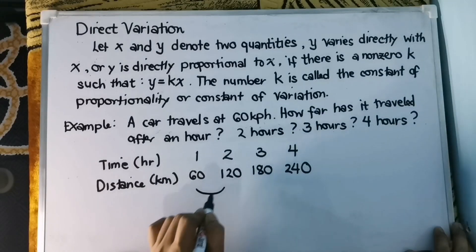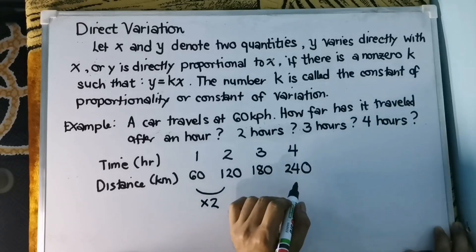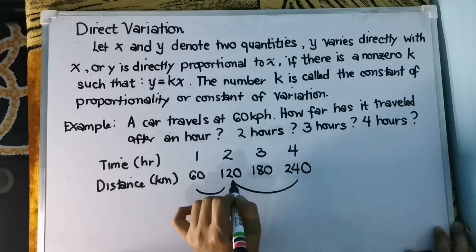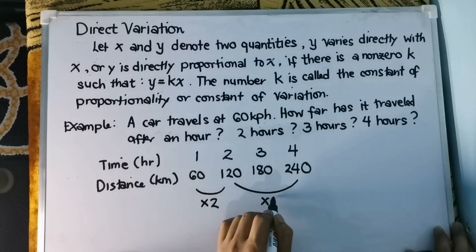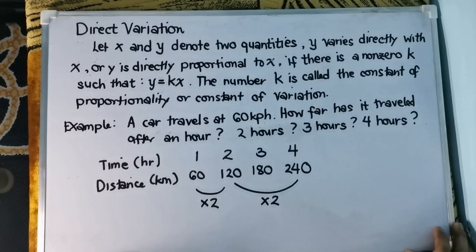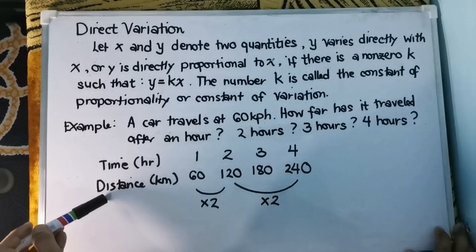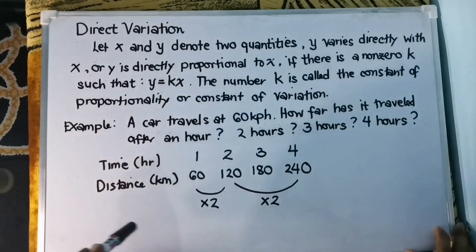For example, one and two going here, that is times two. And then two going to four times two. Therefore, there is a relationship existing between the time and the distance. This is an example of direct variation.